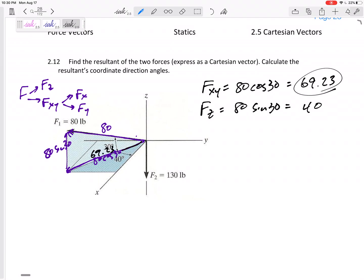And now I'm going to look at this triangle right here. Right, this would be 69.23 cosine 40 and 69.23 sine 40.